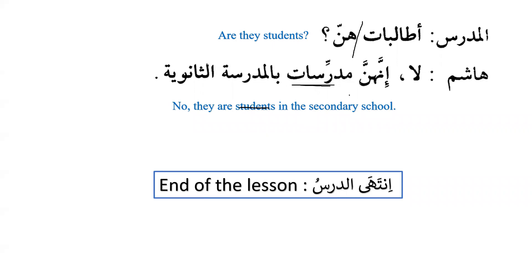Hunna will be ismu inna and mudarrisat will be khabaru inna, and bil madrasi means in the secondary school. End of the lesson. Subhanakallahumma wabihamdika ashhadu an la ilaha illa anta astaghfiruka wa atubu ilayk. Assalamu alaykum wa rahmatullahi wa barakatuh.